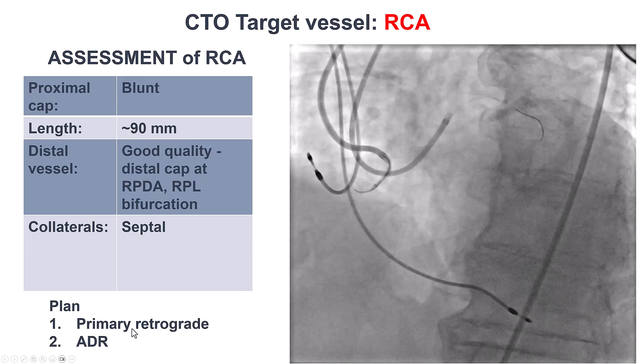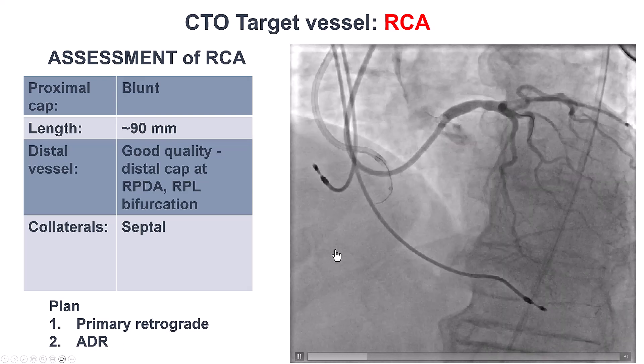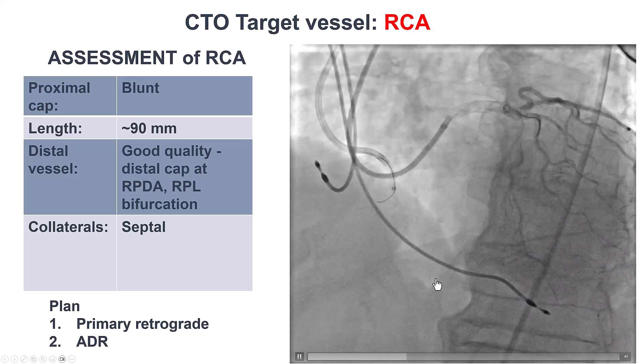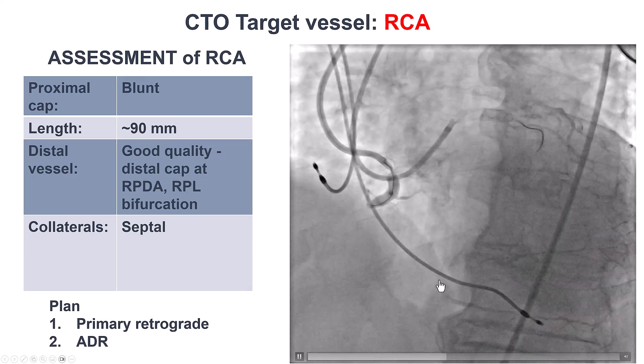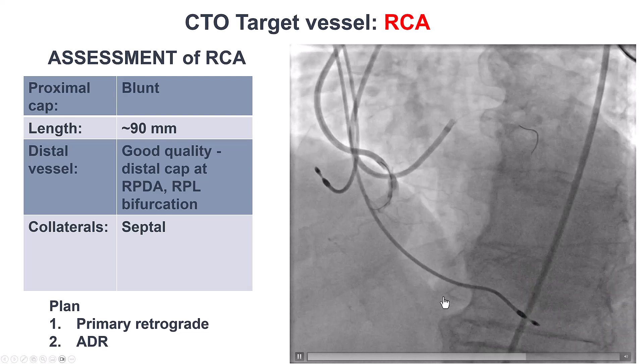If the retrograde approach didn't work, the plan was to go with ADR. However, we knew ADR was going to be very challenging because of the bifurcation at the distal cap.